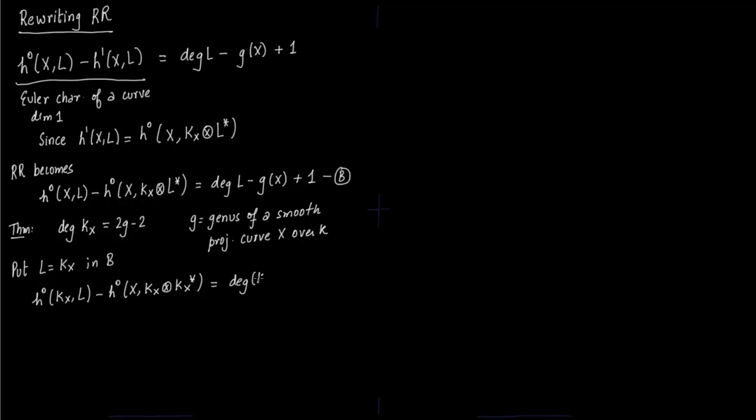Yeah, I should write the first term as x, kx, not kx, L. But anyway you understand. You just replace L with kx. So this is just genus g, which we just covered a few seconds ago. The second term is more interesting. h0 of x, kx tensor with kx star. kx tensor with kx star will just give you O. And this is nothing but the global section of O.